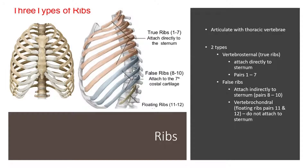Ribs are also part of your axial skeleton and articulate with the costal facet of the thoracic vertebra. There are two types of ribs. There are vertebrosternal ribs, which are your true ribs that attach directly to the sternum — these are pairs one through seven. There are also false ribs, which attach indirectly to the sternum, such as pairs eight through ten. Finally, there are floating or vertebrochondral ribs, which are also false ribs — these are pairs 11 and 12 and do not attach to the sternum.